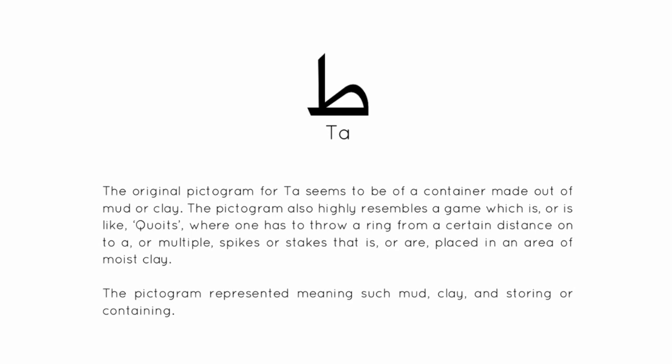The original pictogram for Ta' seems to be of a container made out of mud or clay. The pictogram also highly resembles a game which is like coits, where one has to throw a ring from a certain distance onto a or multiple spikes or stakes that are placed in an area of moist clay. The pictogram represented meanings such as mud, clay, and storing or containing.